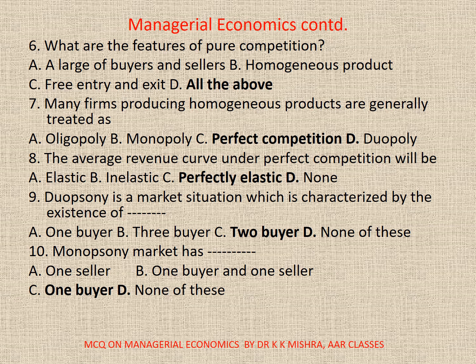7. Many firms producing homogeneous products are generally treated as: A. Oligopoly, B. Monopoly, C. Perfect Competition, D. Duopoly. Correct option is C. Perfect Competition.